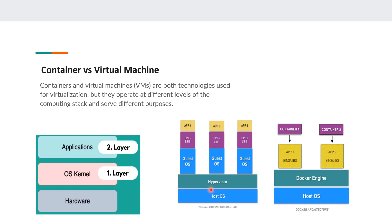A typical example of a virtual machine is the EC2 instance you spin up on AWS. These are a typical example of a virtual machine, because we spin up that virtual machine as a guest on AWS's host physical machine at their back end.